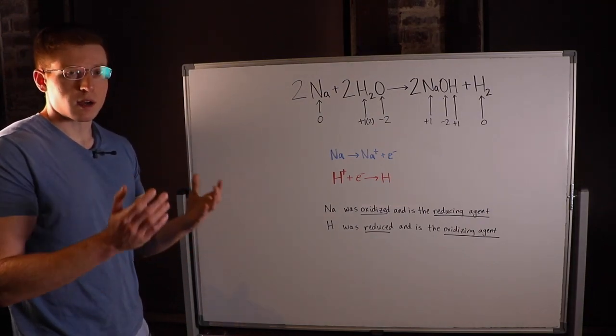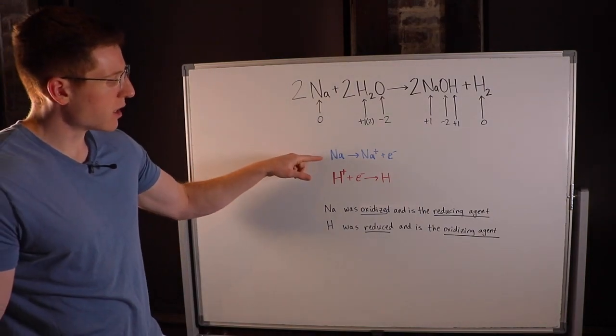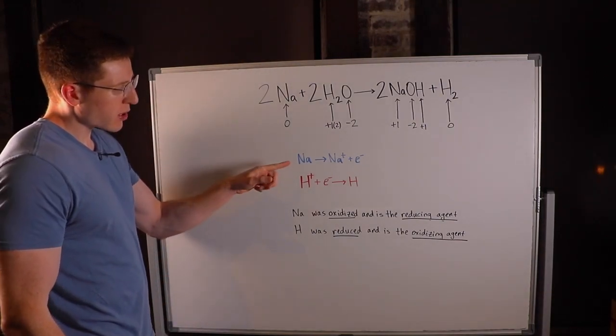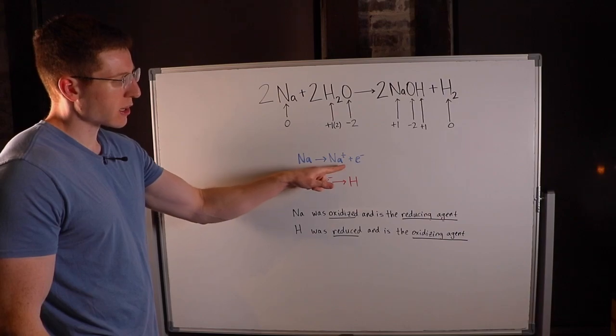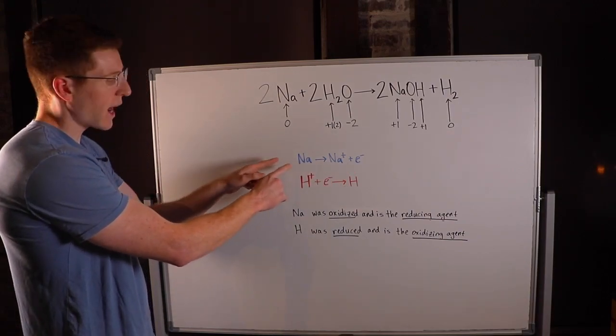Thus, it must have been oxidized. So we can write sodium's half oxidation reaction like this. You can see here that what happened was sodium started out with a neutral charge and then ended up with a +1 charge because it lost one electron. Thus, this is sodium's oxidation half reaction.